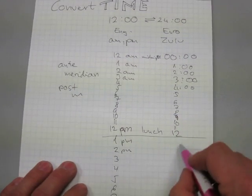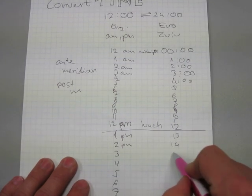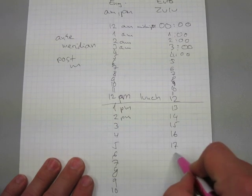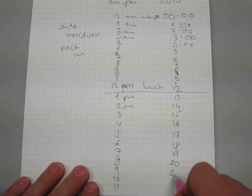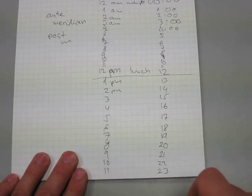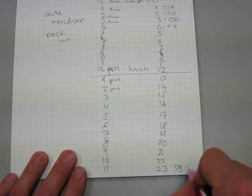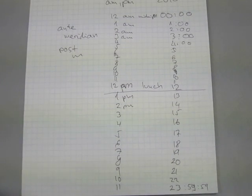We have 13, 14, 15, 16, 17, 18, 19, 20, 21, 22, 23. And at 23:59:59, the clock goes back to 0, and so there is your 24 hours.